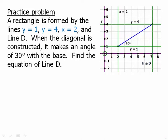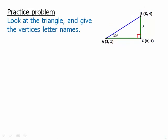Alright, well first of all, it's obvious that D is a vertical line. Like all vertical lines, it has to have an equation of the form x = k. So let's think about this. We're going to look at the triangle and give the vertices letter names.